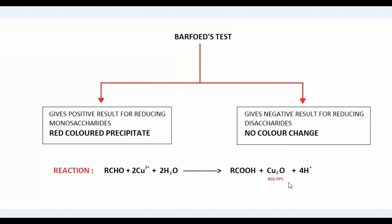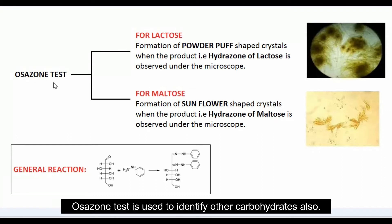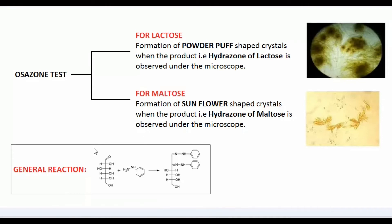Let's move on to the Osazone test. We confirmed from the Barfoed's test that our sample is a disaccharide, and by the Osazone test we will determine whether it is lactose or maltose. In the general reaction, the sugar molecule — our disaccharide — reacts with phenyl hydrazine to form its respective hydrazone.